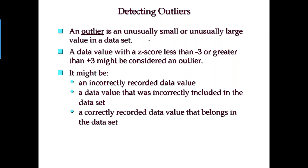When you work with empirical data, especially in the business world, understand why we chose this threshold to identify outliers — or at minimum, memorize it. You convert all your data to z-scores, then look at which values are larger than 3 or smaller than negative 3, as those are potential outliers. If you do find a potential outlier, go back and look at the reason. It might be an incorrectly recorded data value — for example, a typo where 100 becomes 1000. Or it could be a data value incorrectly included from a different sample group.